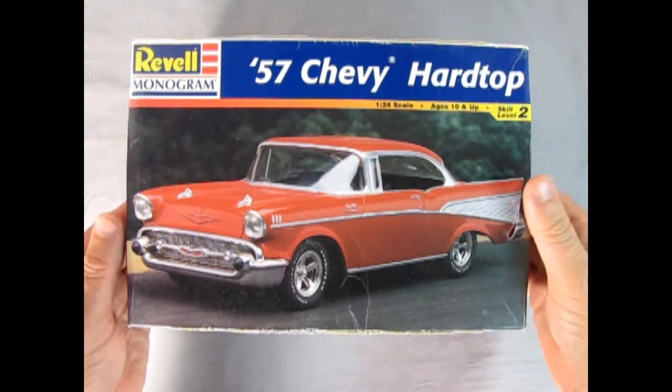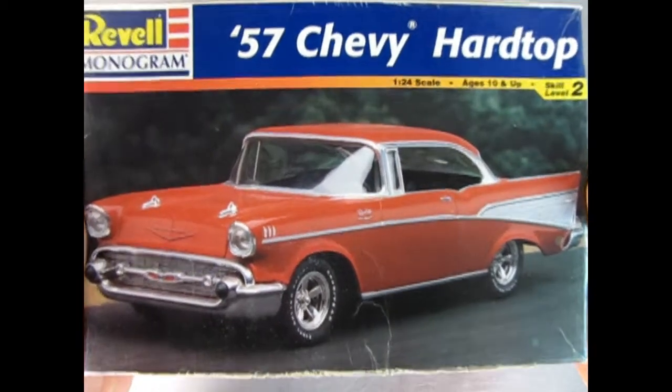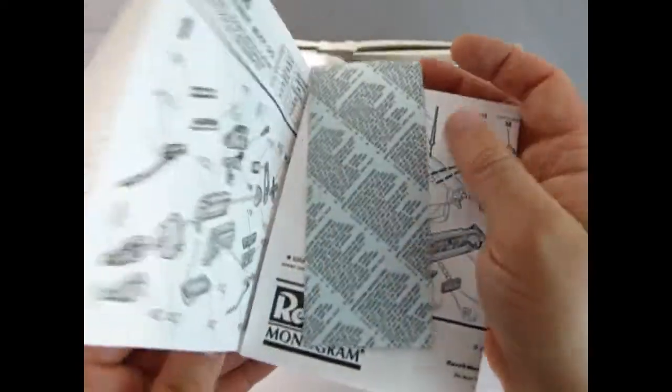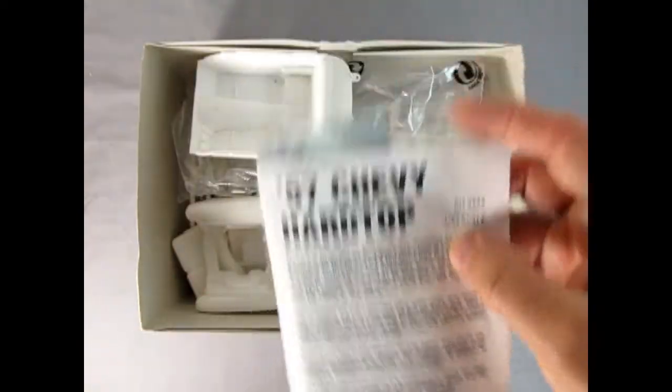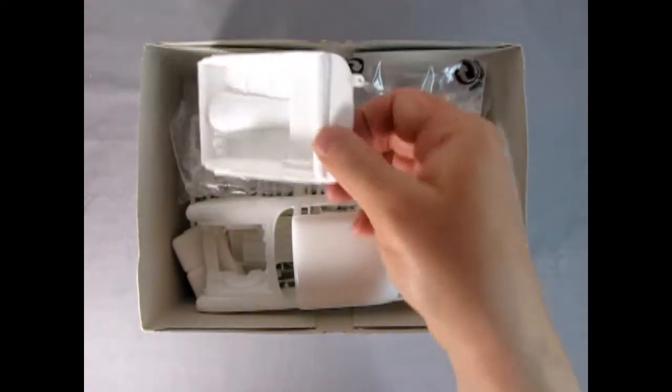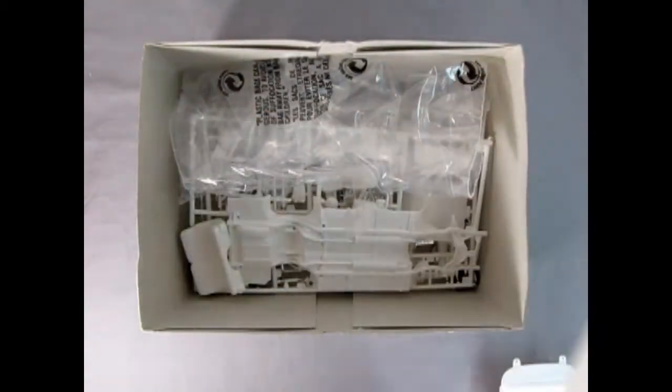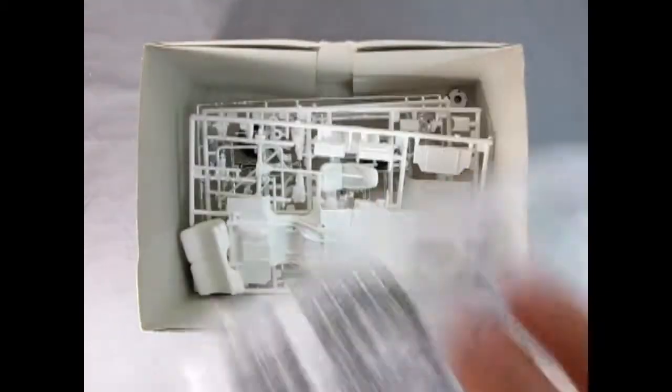Now we can open up this model car and see what's inside the box. Here we have our simple instruction sheet with the decals inside. I'll let Danny the dog show those to you. Then we have the interior tub and the body which is really nice. There's the glass in a bag.